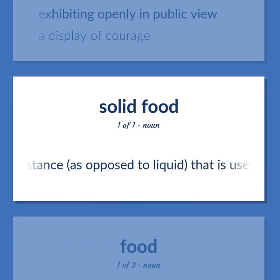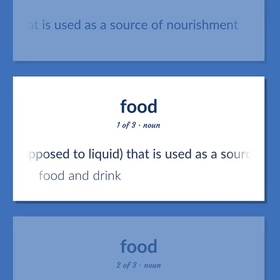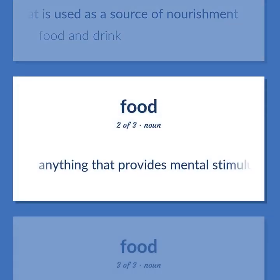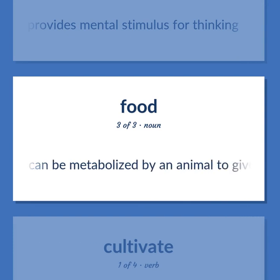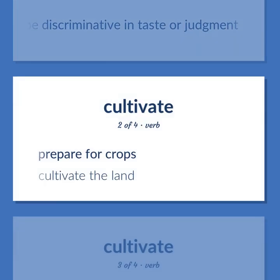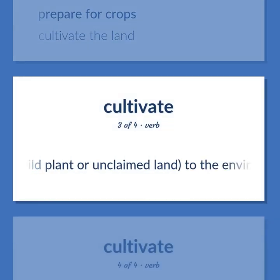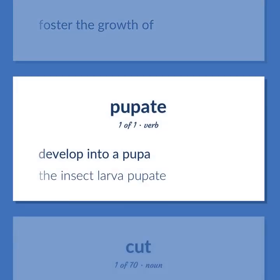Food: Any solid substance, as opposed to liquid, that is used as a source of nourishment. Food and drink. Anything that provides mental stimulus for thinking. Any substance that can be metabolized by an animal to give energy and build tissue. Cultivate: Teach or refine to be discriminative in taste or judgment. Prepare for crops — cultivate the land. Adapt a wild plant or unclaimed land to the environment. Foster the growth of. Develop into a pupa — the insect larva pupates.